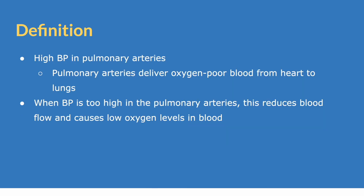Pulmonary hypertension is exactly what it sounds like — it's high blood pressure in the pulmonary arteries. This leads to pulmonary arteries delivering oxygen-poor blood from the heart to the lungs. When the blood pressure is too high in the pulmonary arteries, this reduces blood flow and causes low levels of oxygen in the blood.